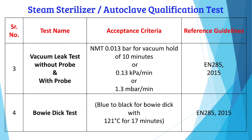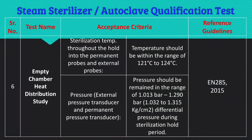The Bowie-Dick test is used to verify that air is removed from the chamber. The acceptance criteria for the Bowie-Dick test is a color change from blue to black at 121°C for 17 minutes. The specific color change is not specified in any guidelines and depends on the supplier or vendor. The reference guideline for this test is EN 285:2015.